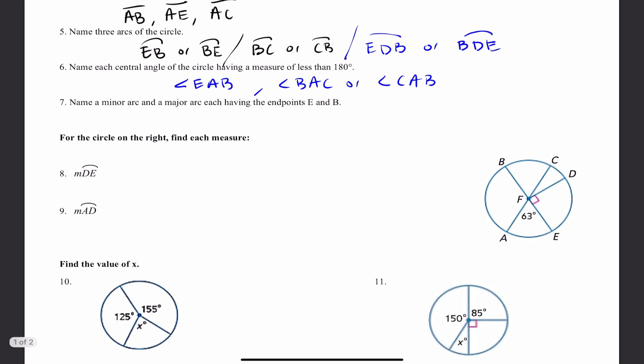For the circle on the right, find each measure. Number 8: the measure of arc DE. The measure of an arc equals the measure of the central angle. So if you can figure out the central angle, that's the answer for the arc. Number 9: the measure of arc AD — please make sure you understand which arc you're referring to, because with two points it's a minor arc, less than 180 degrees.